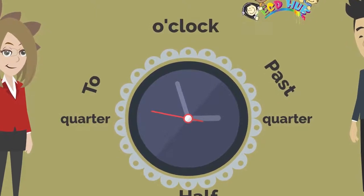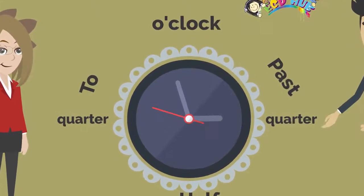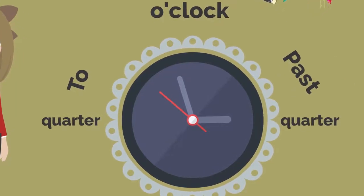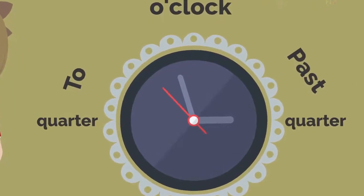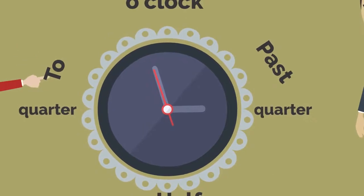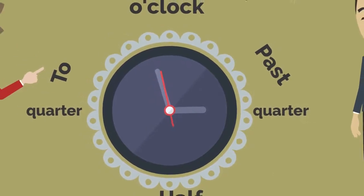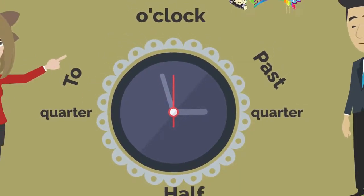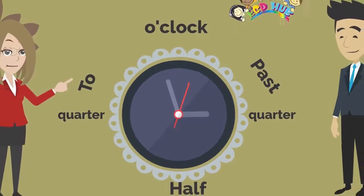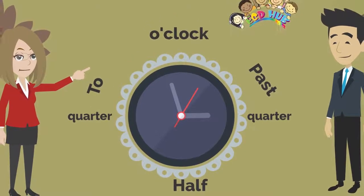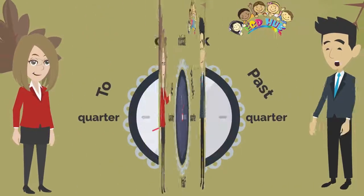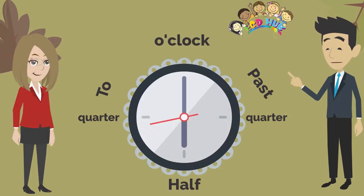Joanna, if the long hand is at the 11 and the short hand is at the 3, what do you think — what time is it? The long hand is at 11 and the short hand at 3. It means the time is 5 to 3. Am I right, Paul? Yes, you are right, Joanna.